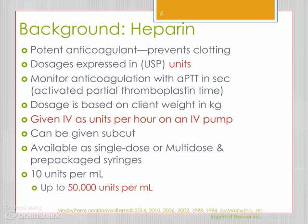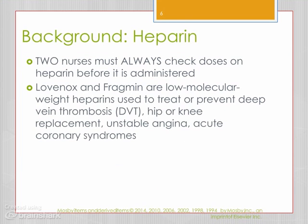The important thing to realize why it is so easy to make a mistake with heparin is that the strength of heparin can range from 10 units per milliliter up to 50,000 units per mL — you could make a horrendous error. As we discussed with pediatric medications, two nurses must always check the dose of heparin before it is administered.